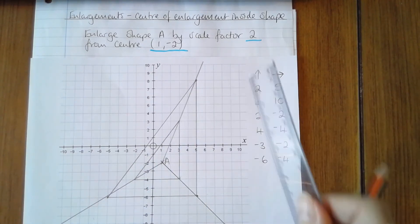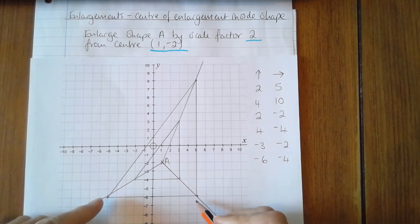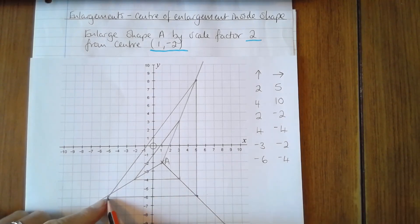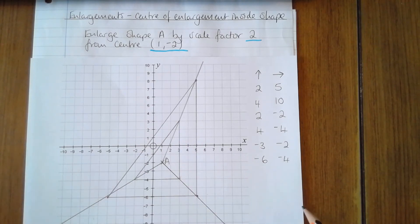We can check the scale factor by checking all of the sides or just one of them. The original shape has a side length of 5 here, and the corresponding side on this shape is 3, 6, 9, 10. So it is a scale factor 2 enlargement.